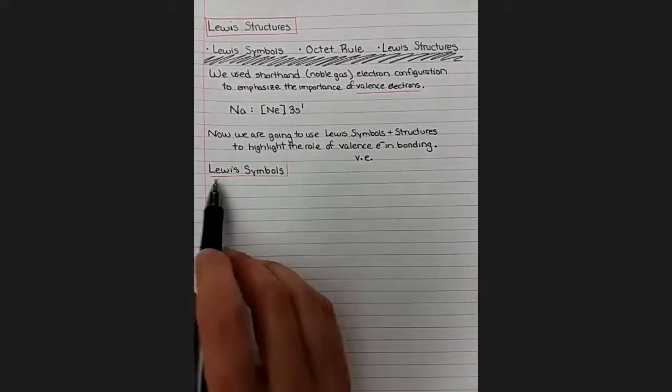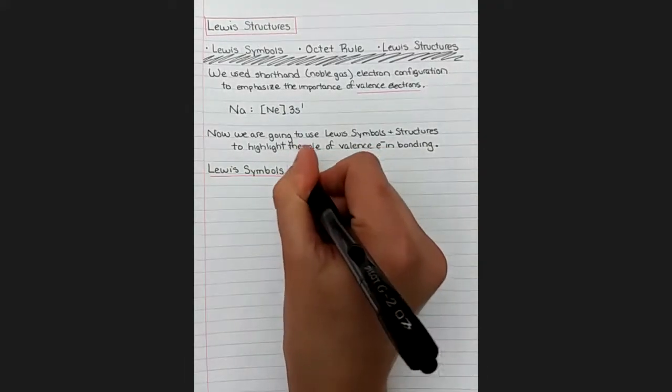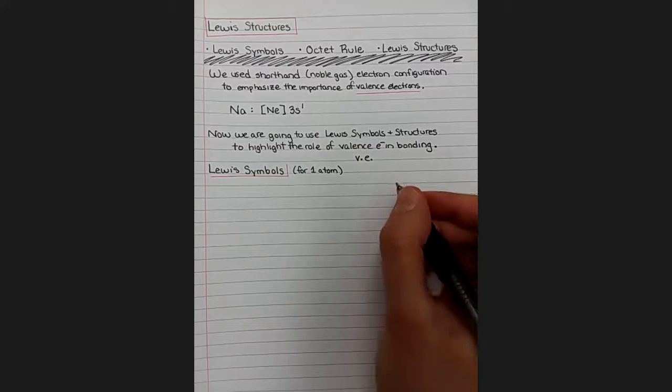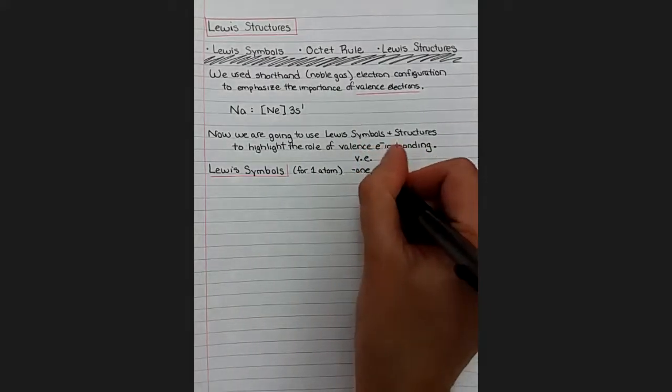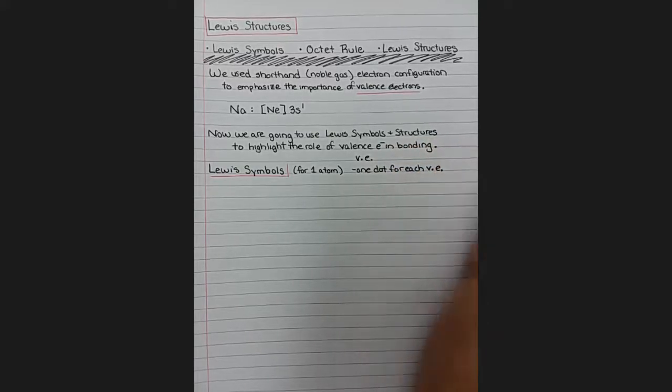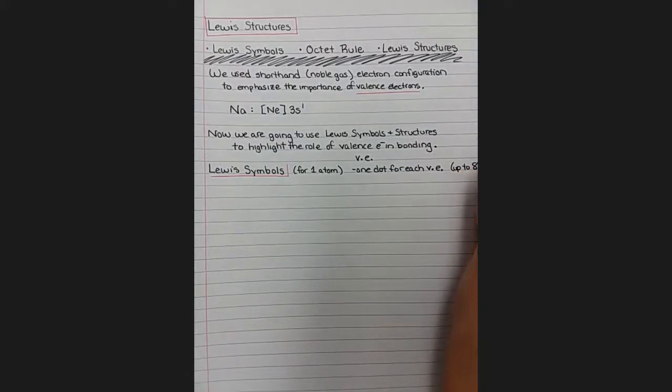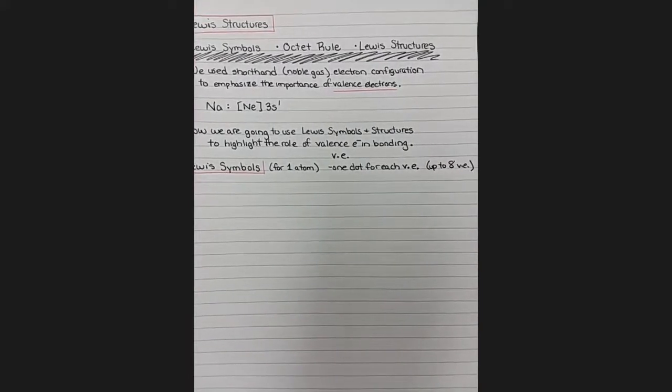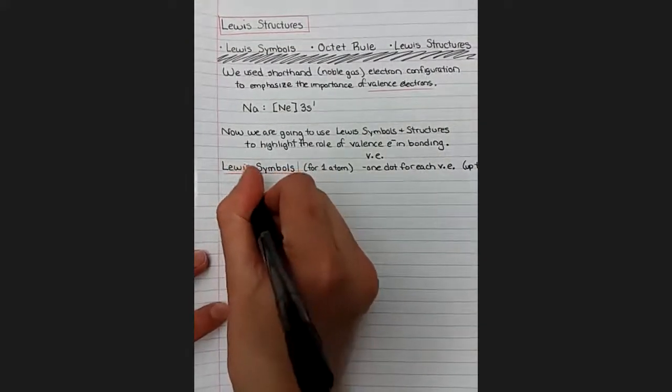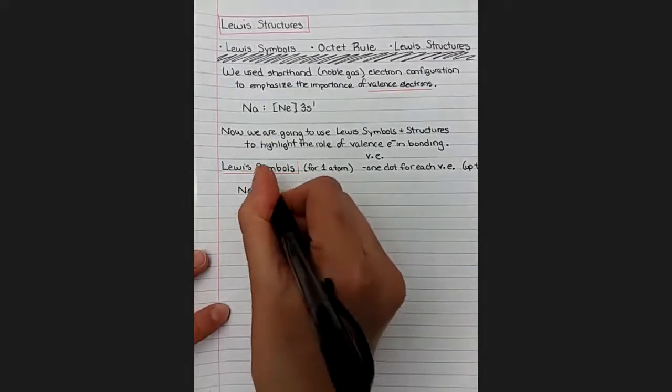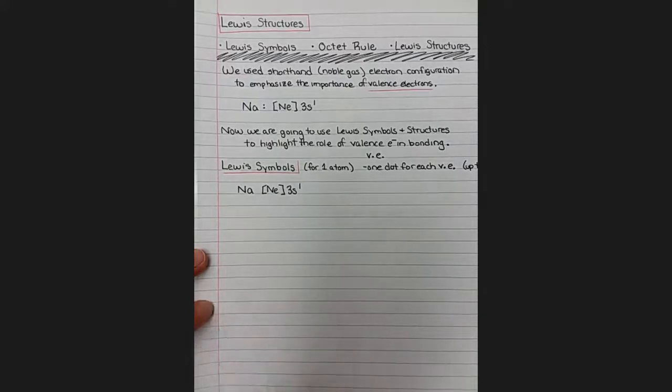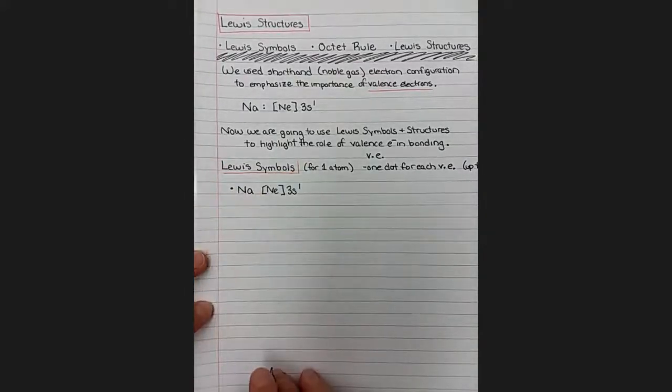So the simplest version of a Lewis structure is a Lewis symbol, which is a Lewis structure for a single atom. In a Lewis symbol, we use one dot for each valence electron around the symbol for an atom, up to eight valence electrons maximum. So the way we draw this for sodium, which has an electron configuration of neon 3s1, is it has one valence electron in its outermost shell, and we represent that with a single dot next to sodium.